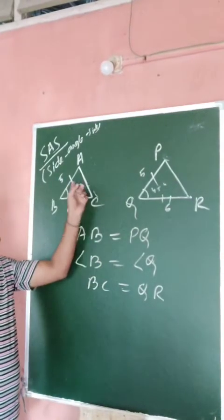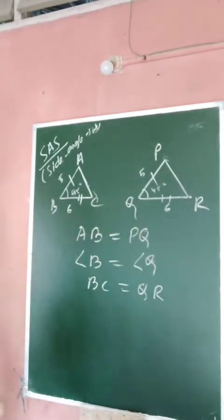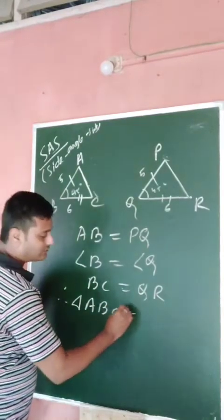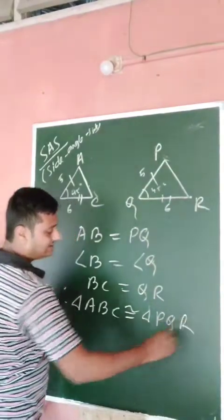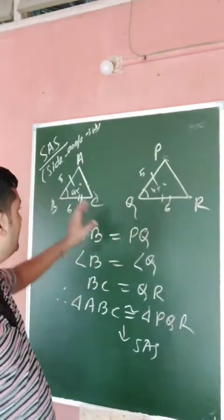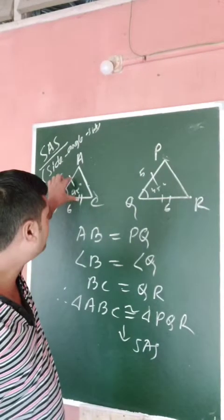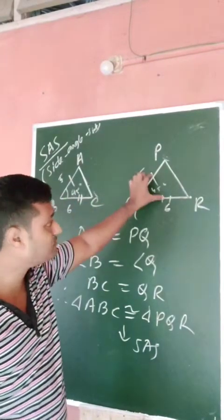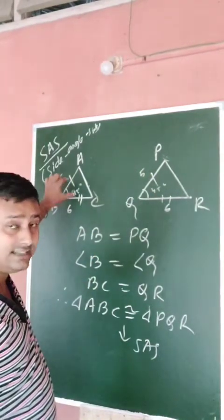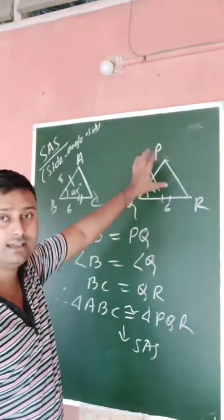So if AB equals PQ, angle B equals angle Q, and BC equals QR, then triangle ABC is congruent to triangle PQR by the SAS criterion — because two sides and the included angle of one triangle equal the corresponding two sides and the included angle of the other triangle.